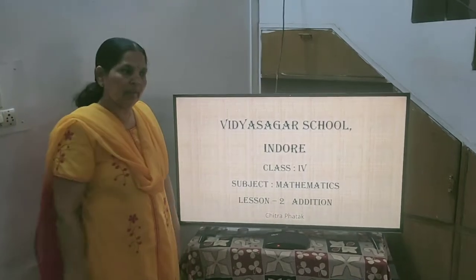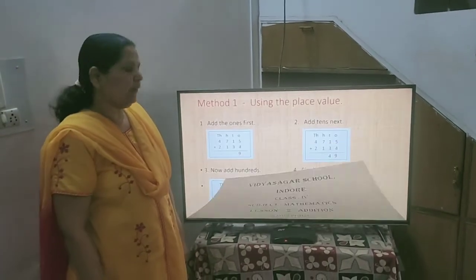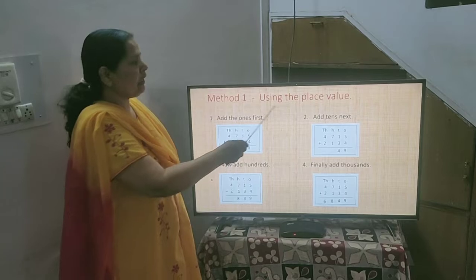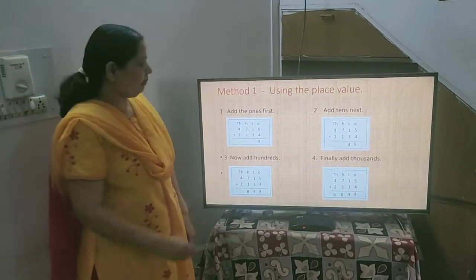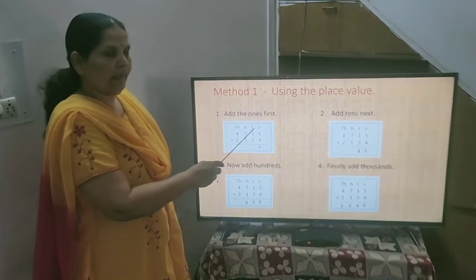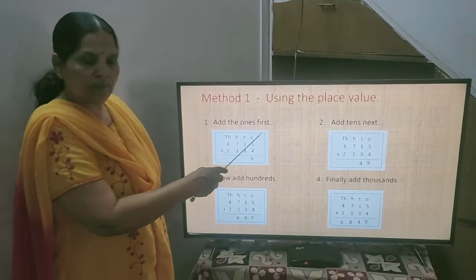When you are doing addition, there are 2-3 methods. The first method is using the place value. In place value, you have to write the numbers in columns like here I have written. Then you have to start with ones. 5 plus 4 comes 9.